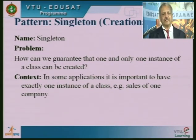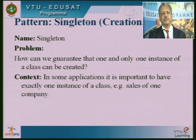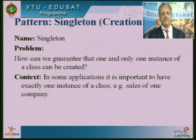Let us see a creational pattern — singleton. The name is singleton, and the problem is: how can we guarantee that one and only one instance of a class can be created? In some applications it is important to have exactly one instance of a class — for example, the sales records of one company. We have to have only one object created from a class. This is called singleton because the word 'creational' refers to creating a unique object from a class.